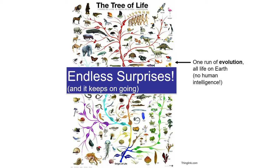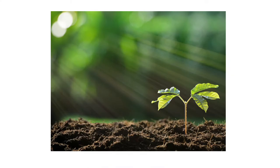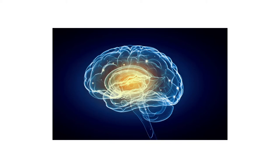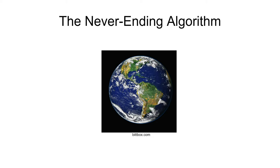The process itself is a process of endless surprises. We can't really predict where it's going to go in the future, and we couldn't have predicted where it has been. Look at the kinds of things it produces along the way — it invented photosynthesis, it invented the flight of birds, it invented intelligence itself, all in one single run. It just can't be understated how amazing this kind of process is. You might call it a never-ending algorithm, because it's been going for a billion years or more and it's not stopping — and it's called open-ended evolution.